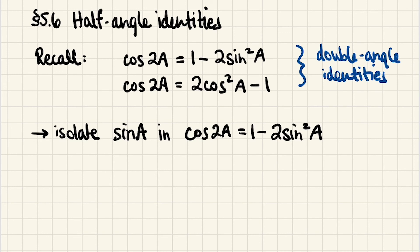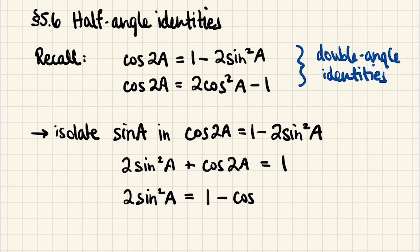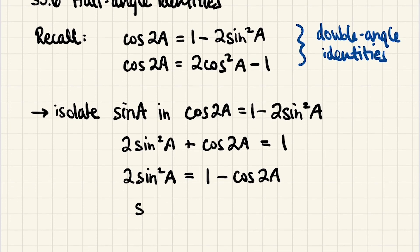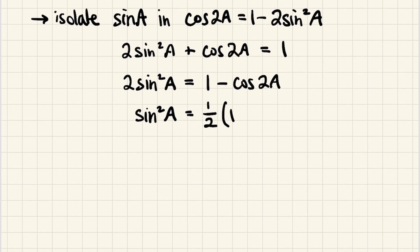If we add 2 sine squared a to both sides of this identity, we're going to get 2 sine squared a plus cosine of 2a is equal to 1. And now let's subtract cosine of 2a from both sides, so we get 2 sine squared a is 1 minus cosine of 2a. And now let's divide everything by 2 in order to have sine squared by itself, giving us one half of 1 minus cosine of 2a.